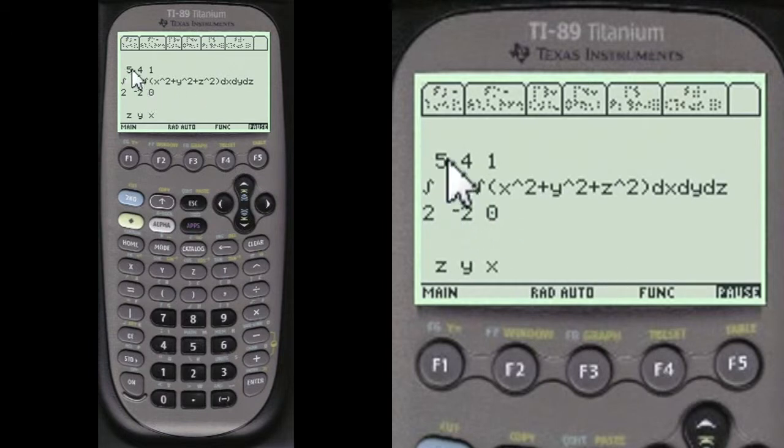Again, here they are. Notice that you're going to do dx dy dz. You're going to do with respect to x first. Integrate this with respect to x, then y, then z. Here's the x limits. Here's the y limits and here's the z limits.